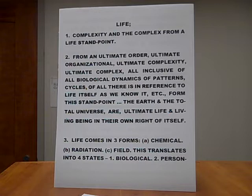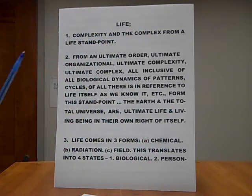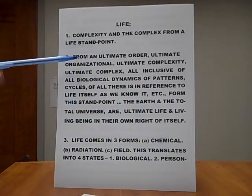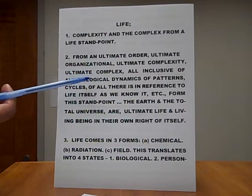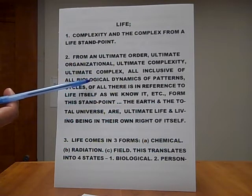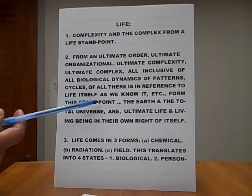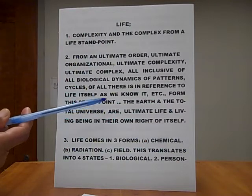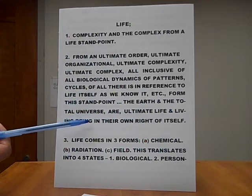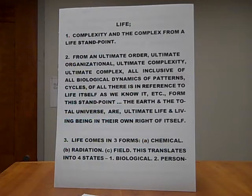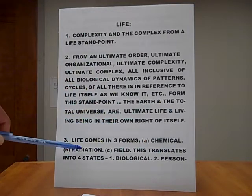Now, let's continue. Life. Life right here. Number one, complexity and the complex from a life standpoint. Number two, from an ultimate order, ultimate organizational, ultimate complexity, ultimate complex, all inclusive of all biological dynamics, of patterns, cycles, of all there is in reference to life itself as we know it, etc., forms this standpoint, that the earth and the total universe are ultimate life and living being in their own right of itself. Number three, life comes in three forms. A, chemical. B, radiation. C, field.